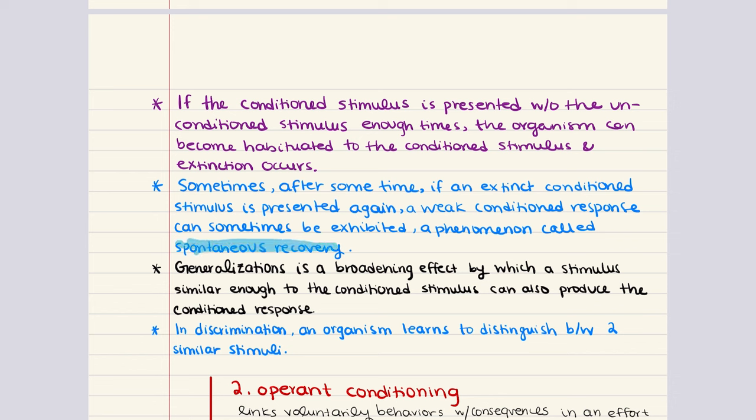Then we have fixed interval schedules. These reinforce the first instance of a behavior after a specified time period has elapsed. For example, once our rat gets a food pellet, it has to wait 60 seconds before it gets another. That first lever press after 60 seconds gets it a food pellet, but any subsequent presses during those waiting 60 seconds accomplishes nothing. Last but not least, we have variable interval schedules. These reinforce a behavior the first time it is performed after varying intervals of time. Instead of waiting exactly 60 seconds, our rat might have to wait 90 seconds, then 30 seconds, then three minutes — and once the interval elapses, the next press gets the rat a pellet.